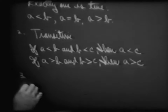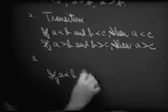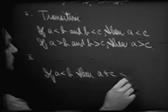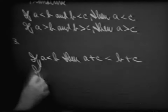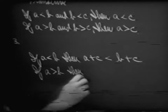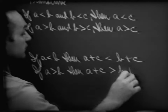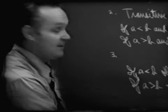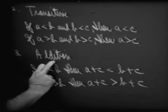Let's look at another axiom. If A is less than B, and we take some number C and add it to A, then A plus C is going to be less than B plus C. Similarly, if A is greater than B, then for every real number C, A plus C must be greater than B plus C. This is the addition axiom with respect to inequality.